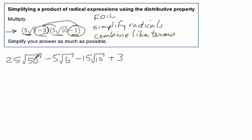I know that radical 50 is the same as radical 25 times radical 2. Which would be 5 radical 2 times that 25. That makes 125 radical 2, minus 5 radical 5. That doesn't simplify. Radical 10 doesn't simplify. So it stays. Minus 15 radical 10, and then plus 3.